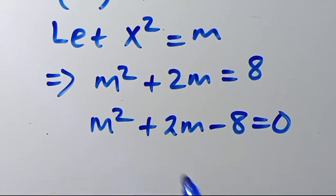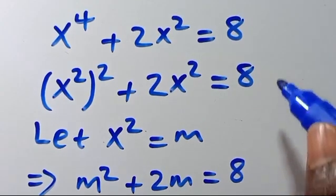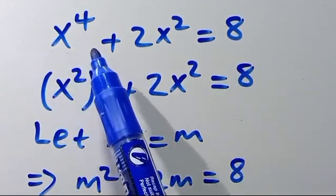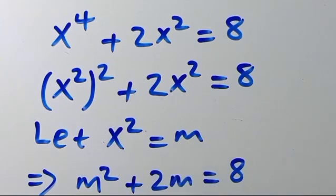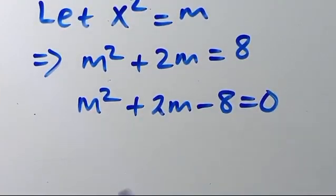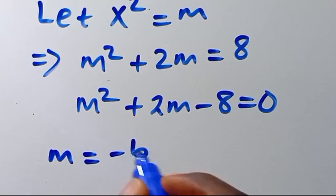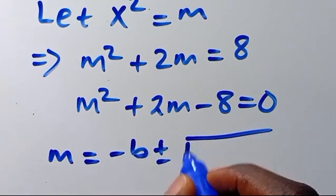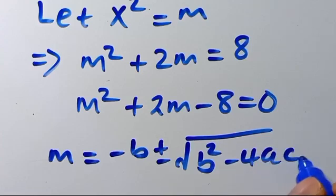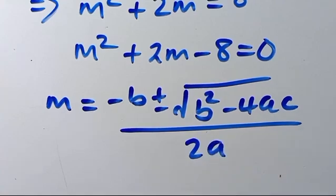So we can solve this quadratically. We've reduced this solution — which had power of 4, so we expect 4 possible solutions — to this quadratic format. We solve using M equals negative B, plus or minus the square root of B squared minus 4AC, over 2A.